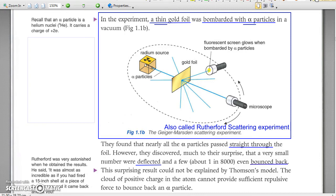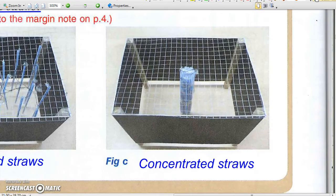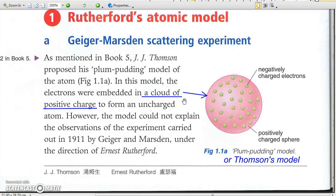These results suggest that the mass and charge concentrate at a tiny point, as in the case of the second black box in the Let's Begin section. As the cloud of positive charge in Thomson's model cannot produce sufficient repulsion to alpha particles, it can hardly deflect or even bounce back the alpha particles. The model failed to explain the result of scattering experiment.